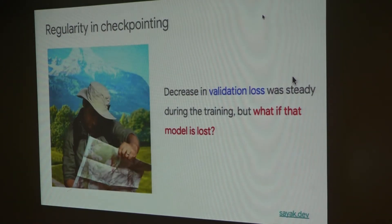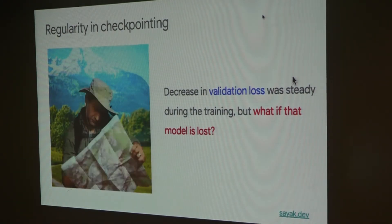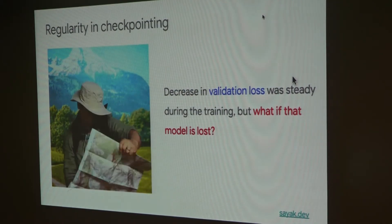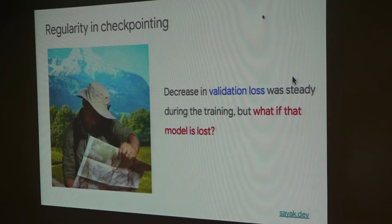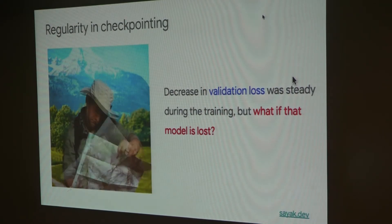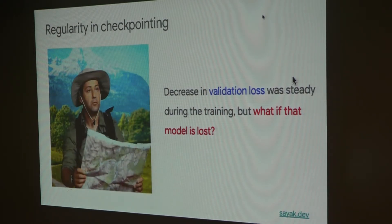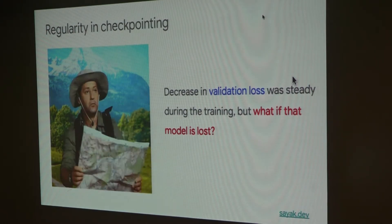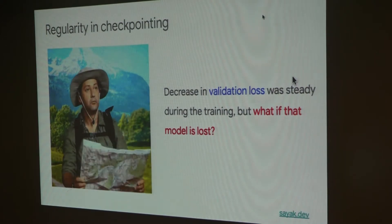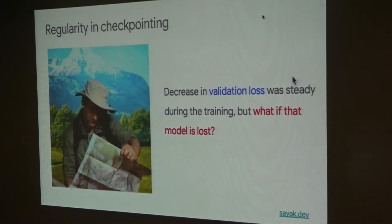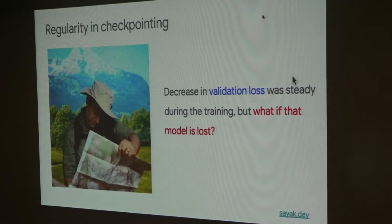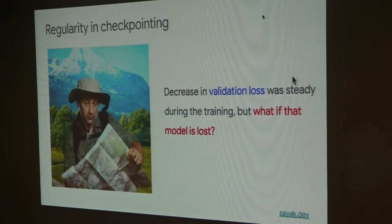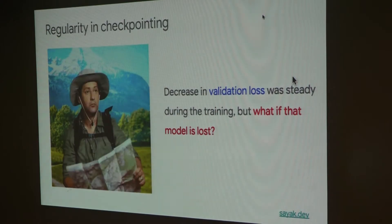Checkpointing is another strategy we almost always forget to implement. Many practitioners forget about setting up a proper checkpointing strategy. The idea is: let's say you had a steady decrease in the validation loss — but what if the model that caused that steady decrease got lost?